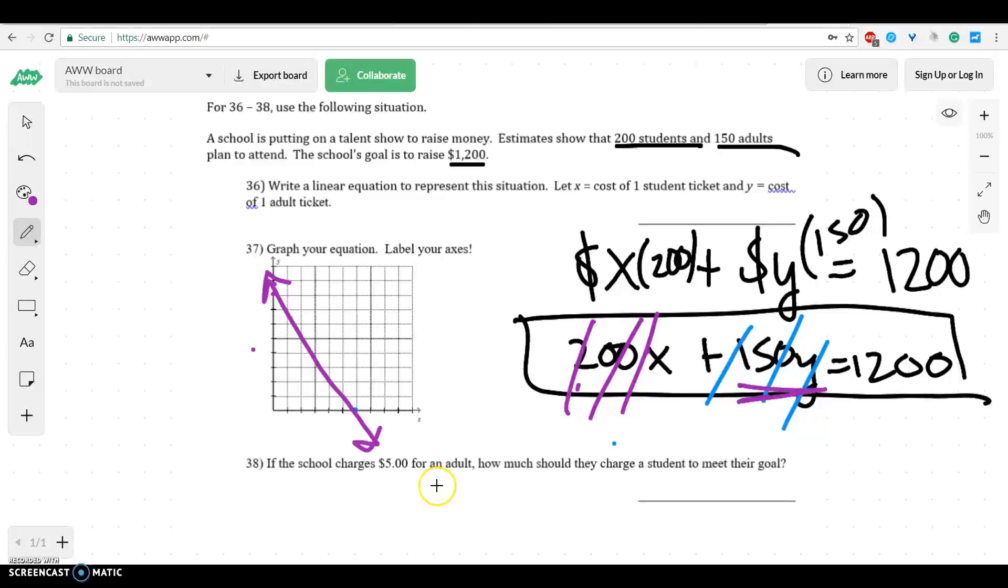Now they go, if the school charges $5 for adults, how much should they charge for students? Well, the nice part is we have a line. So we can just go up to adults, which would be 1, 2, 3, 4, 5, and go over to see what we should charge the students. Well, the students are down here. Whoops. Are down here. So that would be 2. So they should charge the students $2.